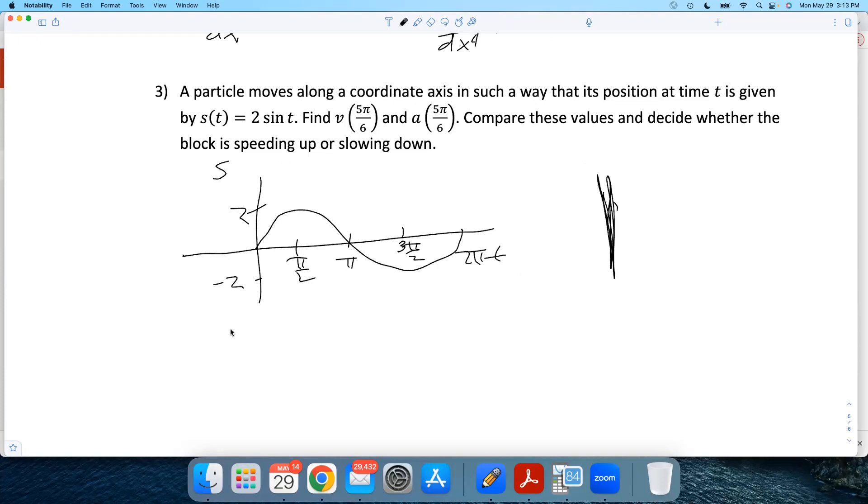Velocity is the derivative of position. The two will come along for the ride, and the derivative of sine is cosine. Acceleration is the derivative of velocity, or the second derivative of position. The derivative of cosine is negative sine, and the two comes along for the ride.